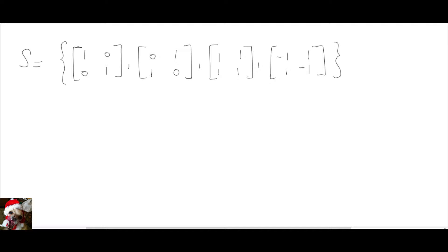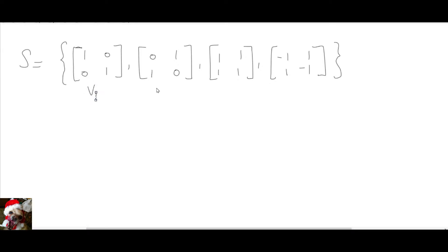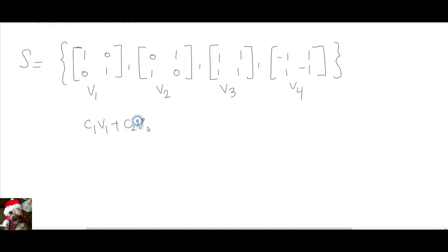We're going to identify this matrix by vector 1, this matrix by a second vector, this matrix by vector 3, and this matrix by vector 4. Then I'm going to set up a linear combination — standard procedure: C1V1 plus C2V2 plus C3V3 plus C4V4 equals the zero vector.